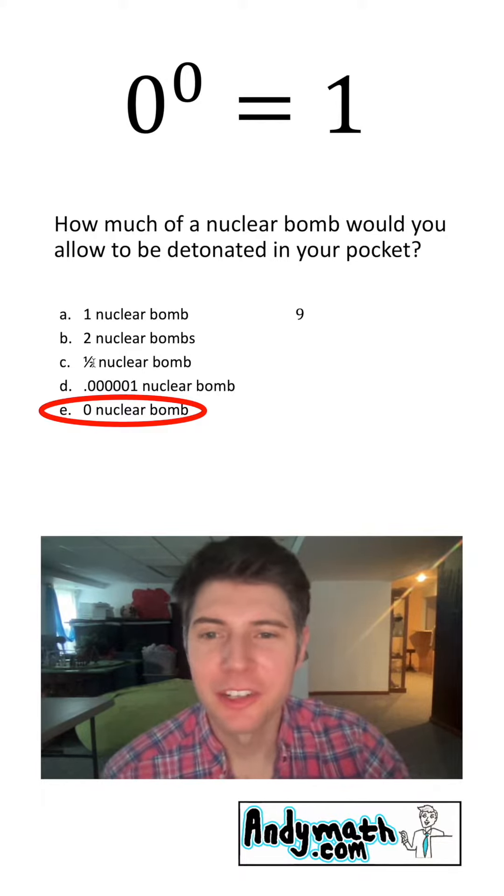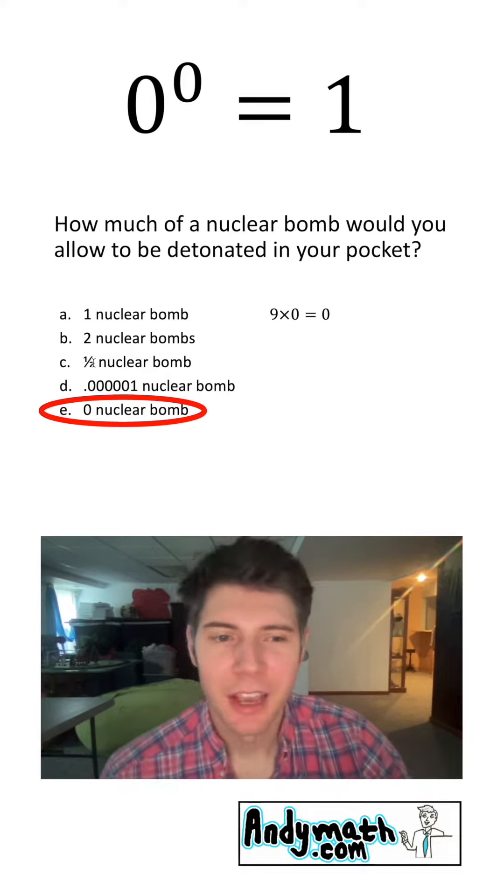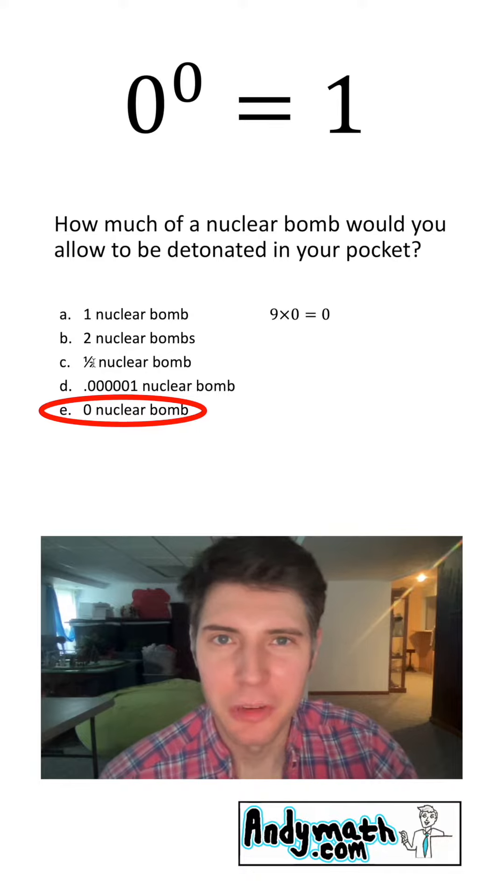So if you're a really happy nine, you're chilling, all of a sudden a multiplication by zero comes along, boom, you're zero. And there's no inverse operation that will bring you back from this.